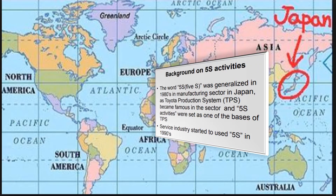5S started in Japan in the 1980s as the Toyota Production System. The service industry started using 5S in the 1990s. So it is almost 30 to 40 years since 5S started, but still you will find so many companies that are not able to maintain 5S. The basic reason is they have not understood or maintained the basic things. In this video I have tried to give some input so that viewers will understand what is the basic minimum requirement to maintain 5S.